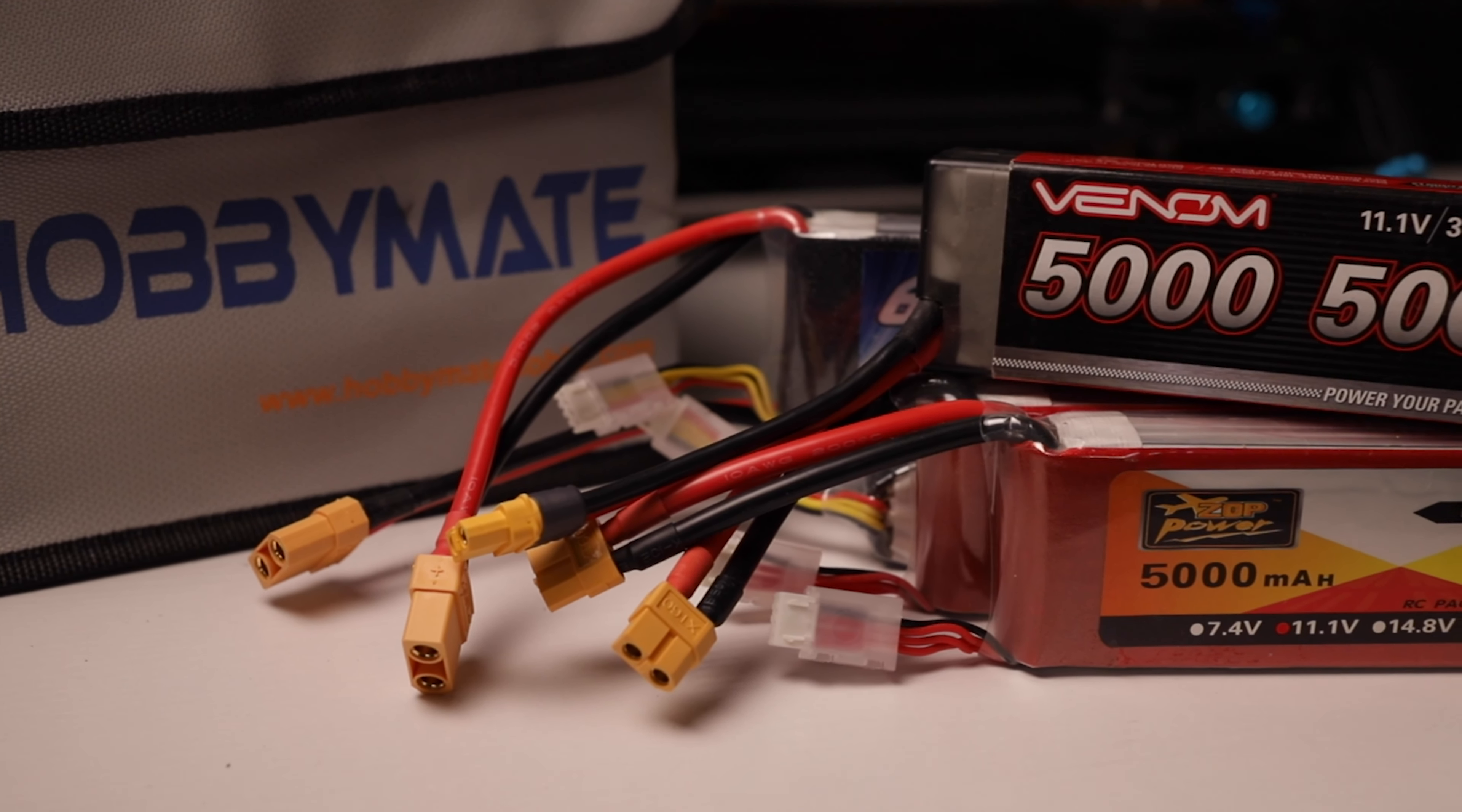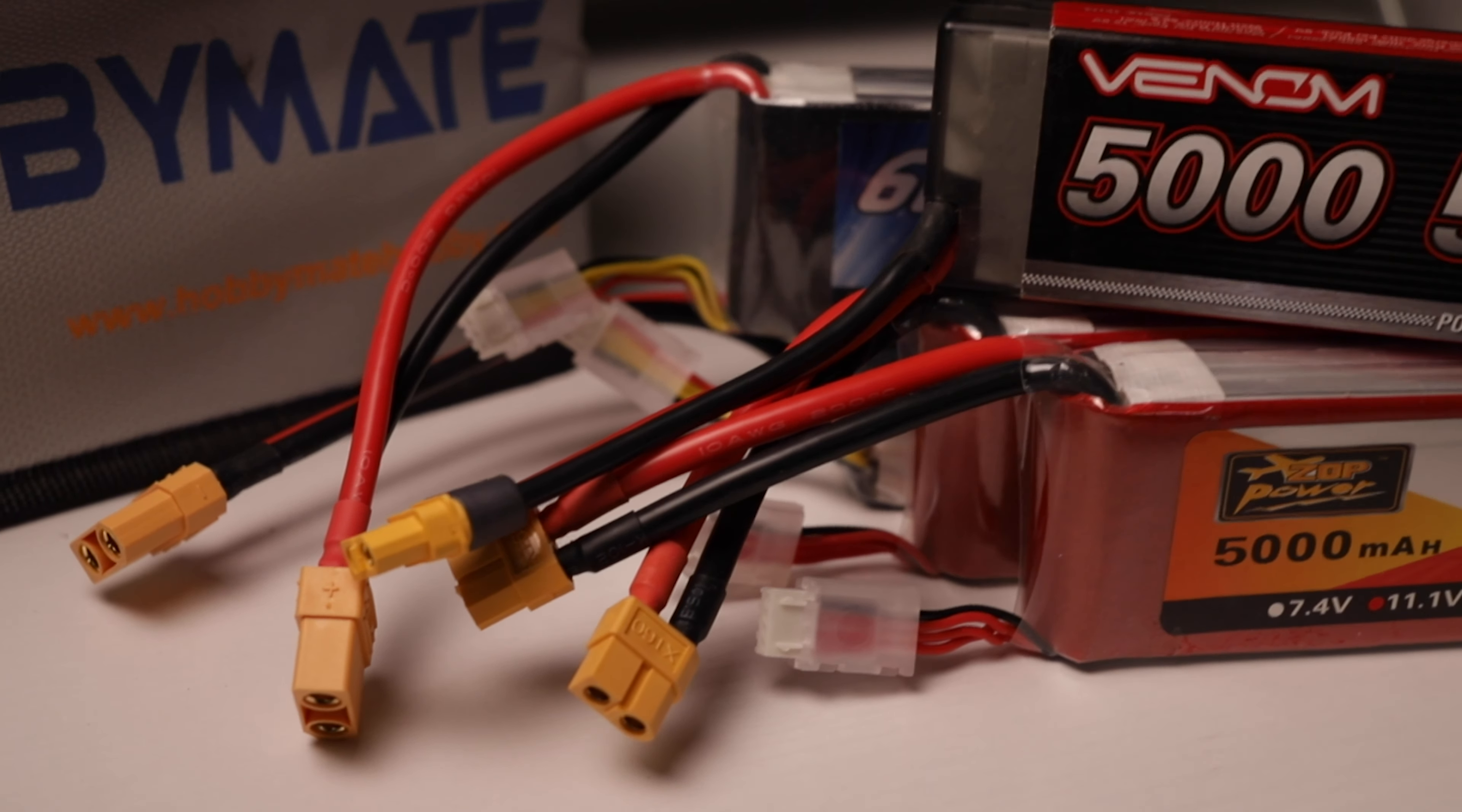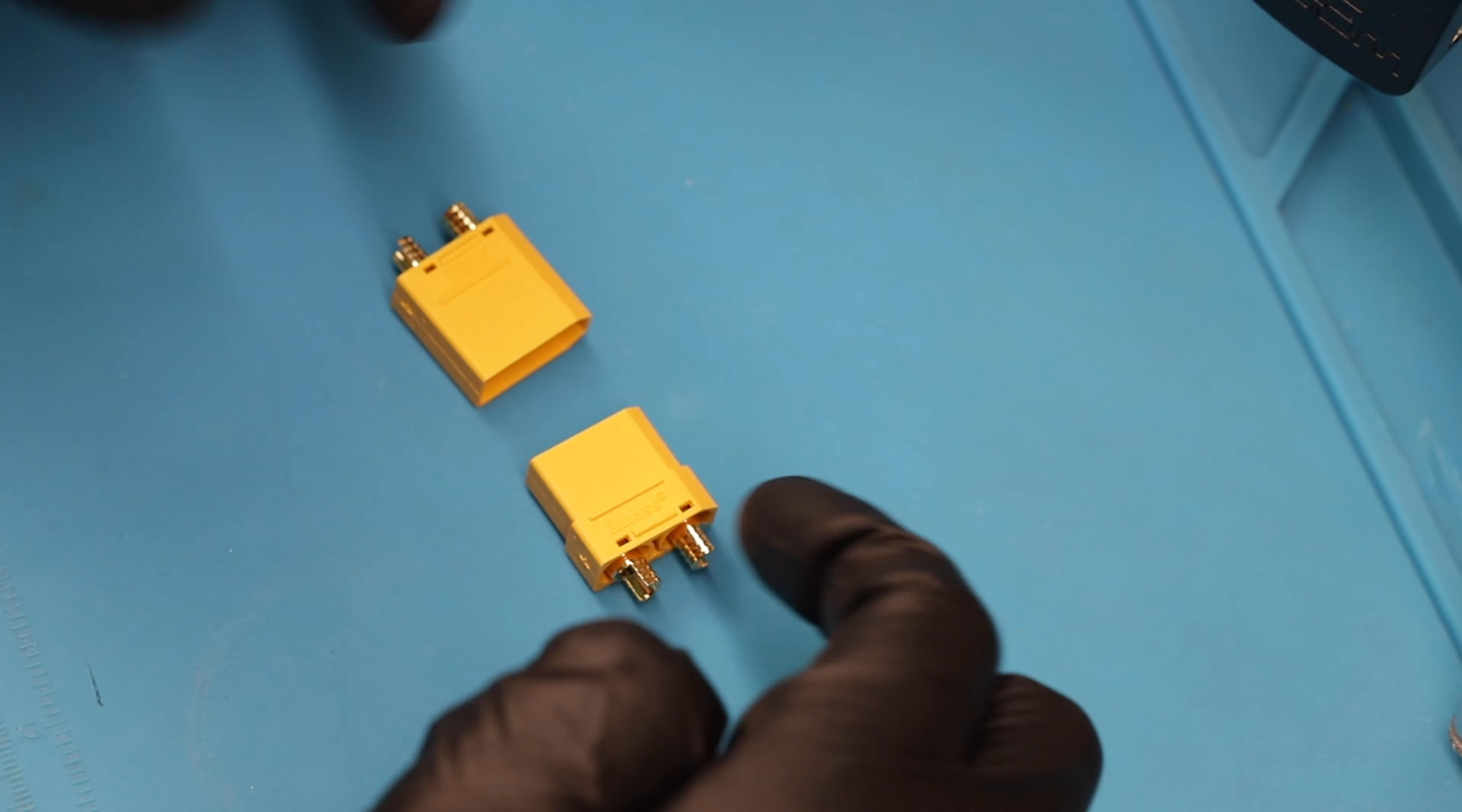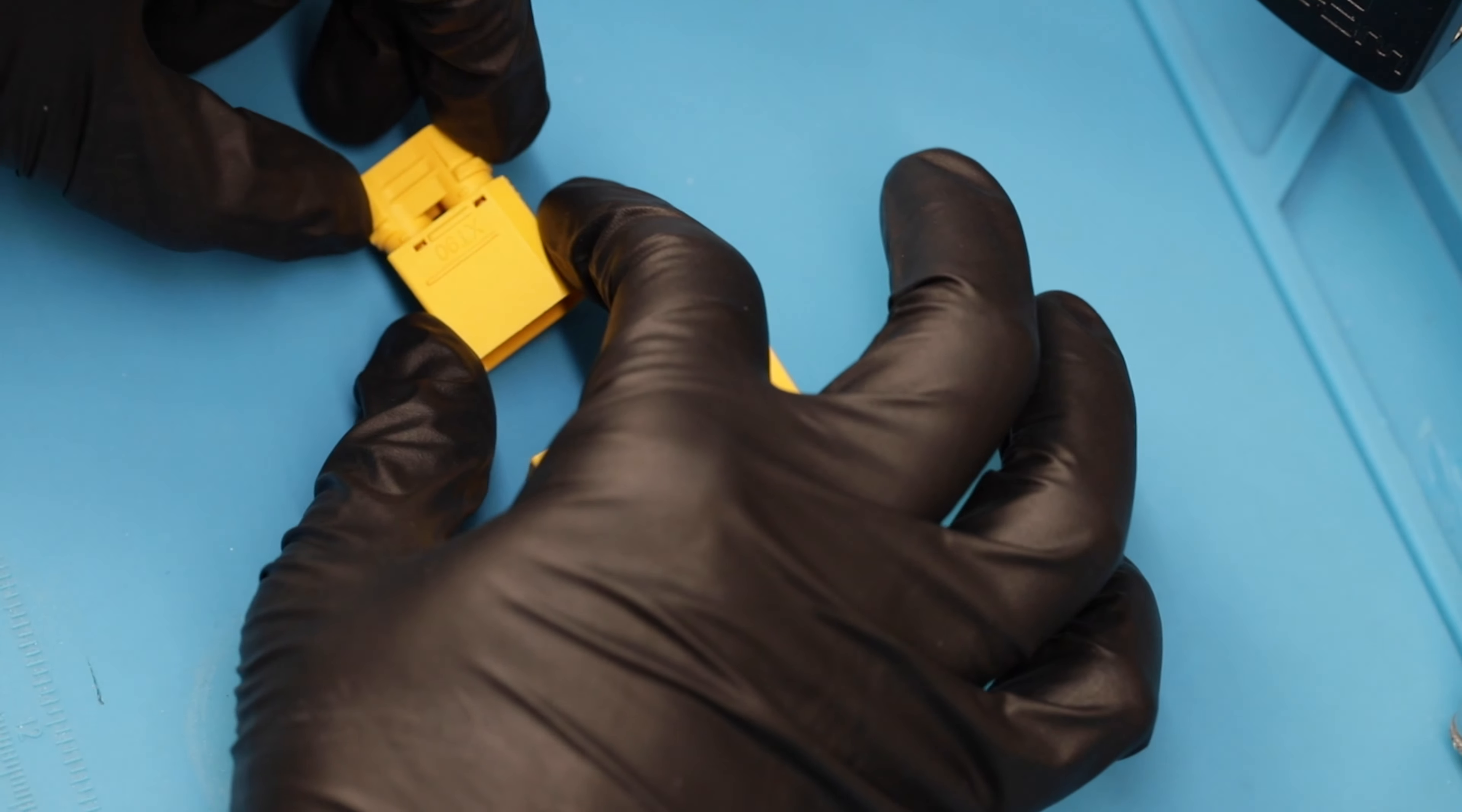I use XT90s. Some people prefer XT60s. Doesn't really matter. The same technique applies to swap out the connectors on a LiPo battery. I got these XT90 connectors off Amazon so I'll link to them in the description. I really like this version of XT90s because it has protection for the wires so you don't accidentally short something out.